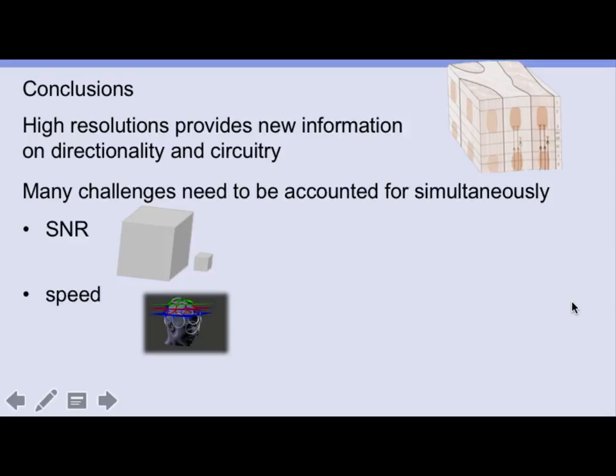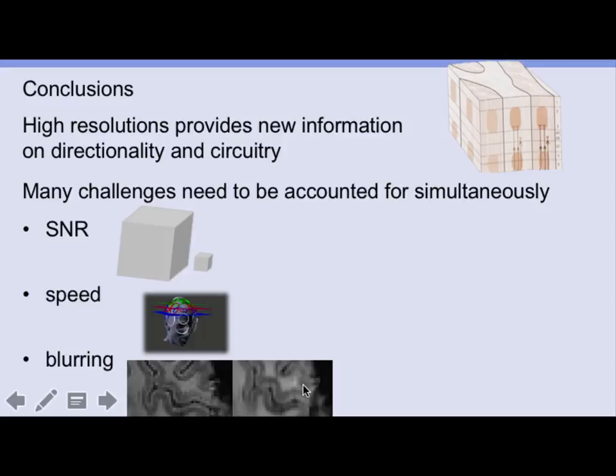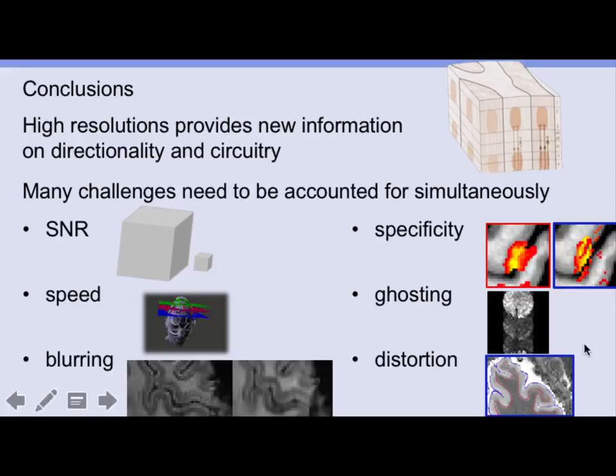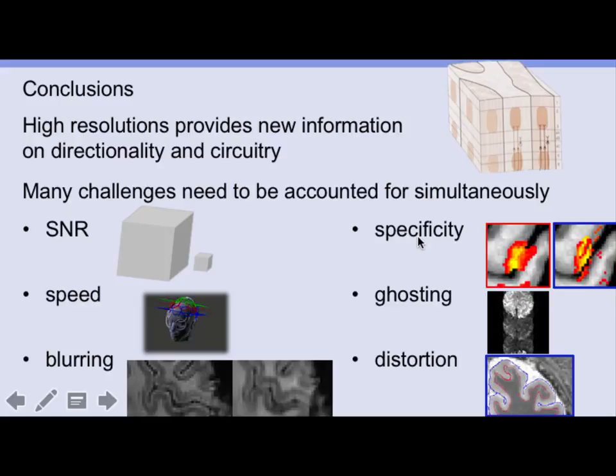In summary, high-resolution, high-field fMRI is super fun and provides valuable information about feedforward/feedback, input-output characteristics, and microcircuitry involved in tasks. However, it comes with many challenges: limited SNR, longer readout durations requiring acceleration, unwanted blurring, unspecific contrast mechanisms, increased ghosting sensitivity, and larger distortions. Only by accounting for all of these challenges can you obtain data suitable for neuroscientific interpretation.